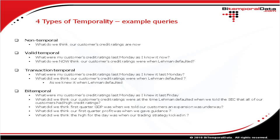With transaction temporal data, we could answer: 'What were my customers' credit ratings last Monday as I knew it last Monday?' or 'What did we think our customers' credit ratings were when Lehman defaulted, as we knew it when Lehman defaulted?' And with bitemporal data, we could answer: 'What were my customers' credit ratings last Monday as I knew it last Friday?' or 'What did we think our customers' credit ratings were at the time Lehman defaulted when we told the SEC all our customers had high credit ratings?' or 'What did we think first quarter GDP was when we told our customers an expansion was underway?' You can see the power of some bitemporal queries there.